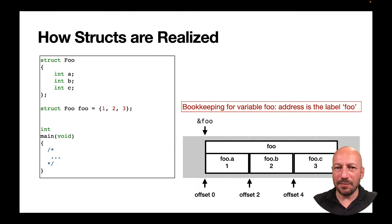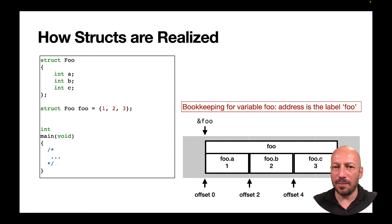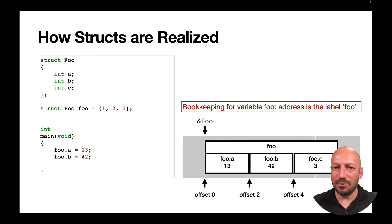Every member of a structured variable has a fixed offset relative to the address of the struct. On the WHIM platform, the offsets for three int members are 0, 2, and 4. If an assignment overrides a member, you compute the address of that member — address of foo plus the offset — and store the value there. For the first member offset is 0, for the second offset is 2, and for the third offset is 4.